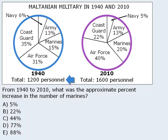In 1940, there were 1,200 military personnel, and 15% of them were Marines. 15% of 1,200 equals 180, so there were 180 Marines in 1940.